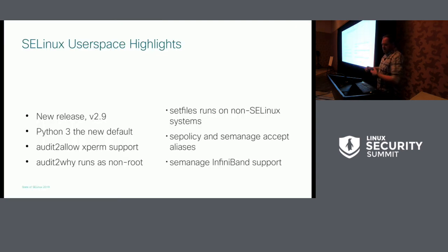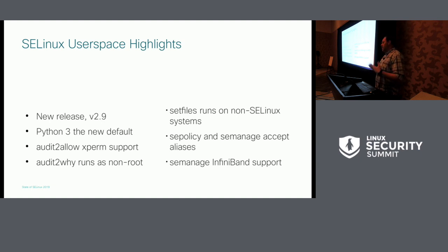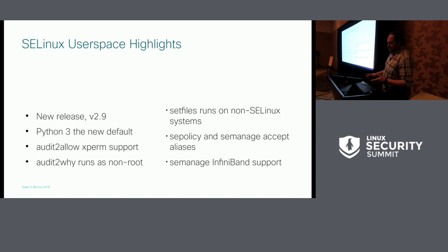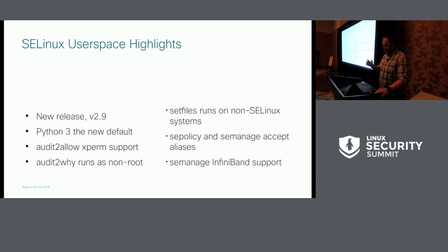On to user space. The big thing is we had a new release this past year, version 2.9. Probably one of the more substantial things is that Python 3 is the new default now. You can still use Python 2, but it's not the default. There's been improvements to audit2allow, audit2why, setfiles, semanage, and sepolicy. We had InfiniBand support — the kernel support was there, they just needed the necessary user space understanding of that. And of course the usual bug fixes and under-the-hood improvements and all that good stuff.